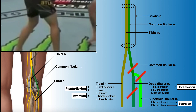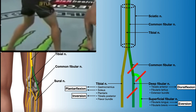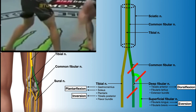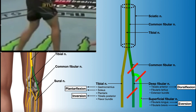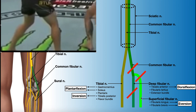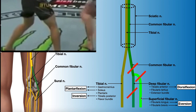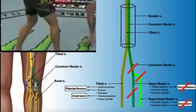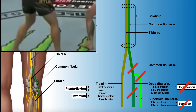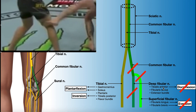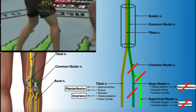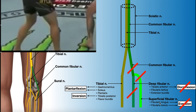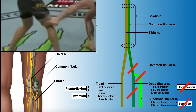Assuming damage to the common fibular nerve, that's going to affect everything downstream from it. It will impact the deep fibular nerve and the superficial fibular nerve, and as a result all the muscles those nerves control will also be negatively impacted. We know his deep fibular nerve was affected — therefore the tibialis anterior is going to be affected and he's going to lose some dorsiflexion. Also, the superficial fibular nerve was affected, so the fibularis muscles are going to be affected and he's going to lose some eversion as well.